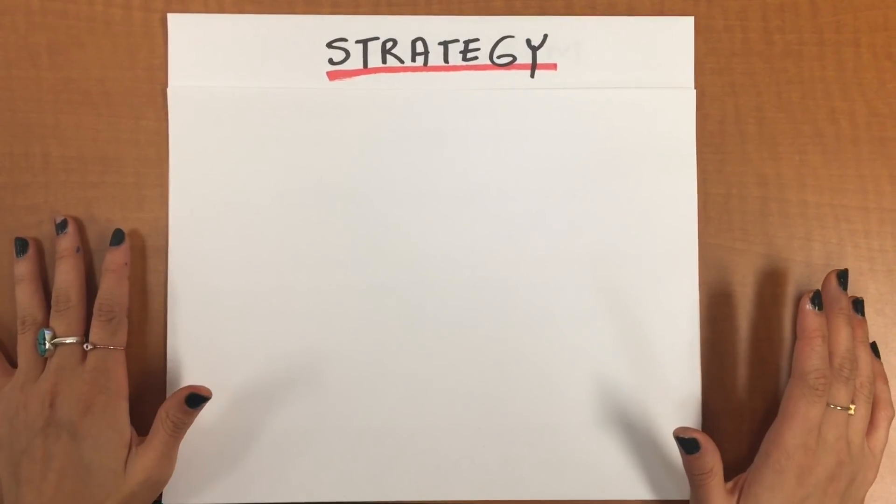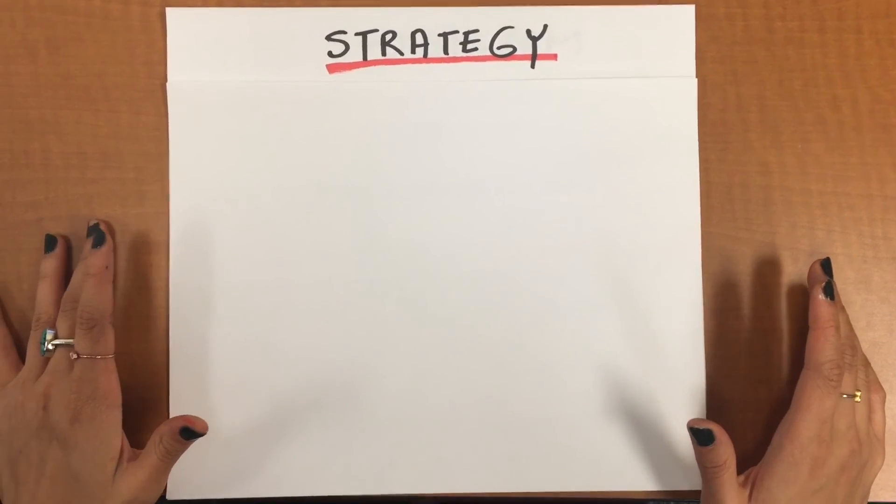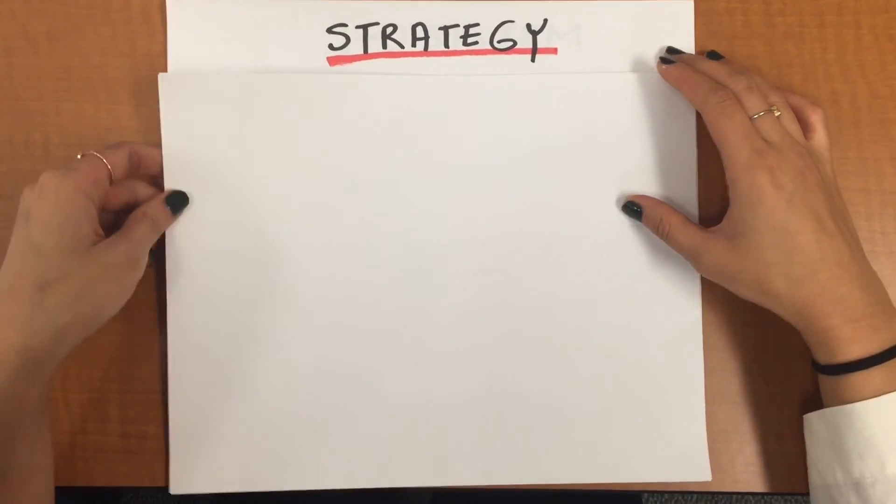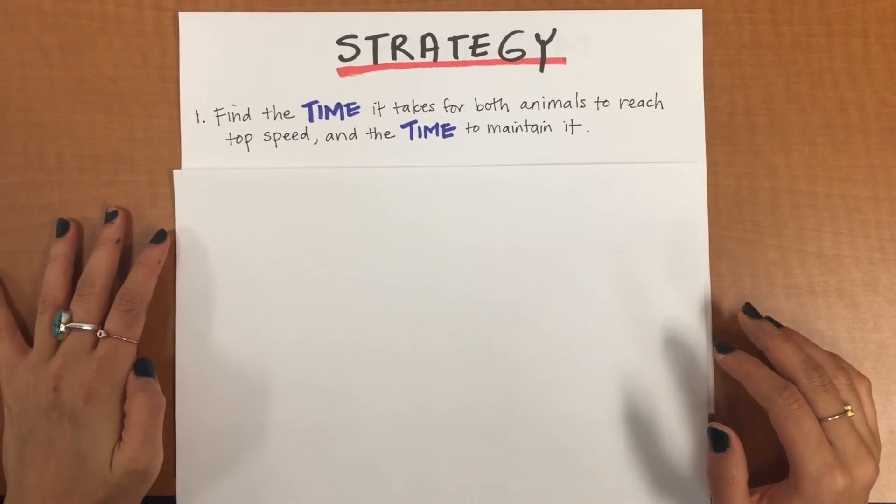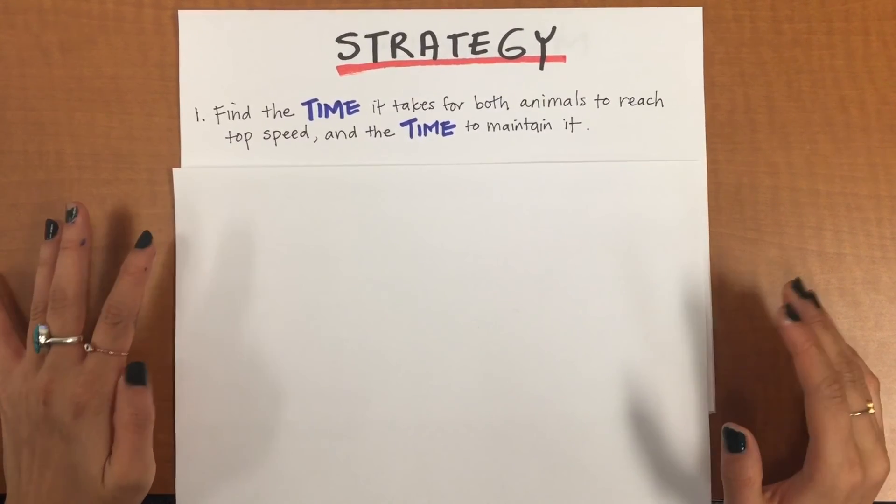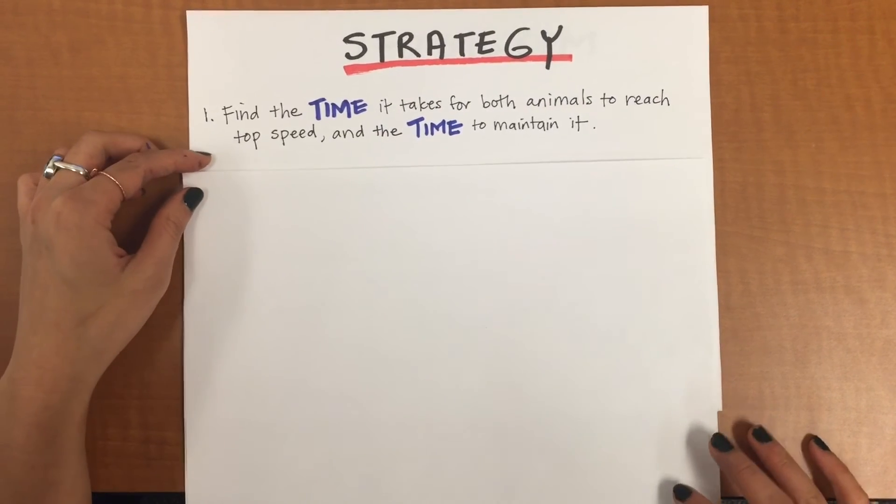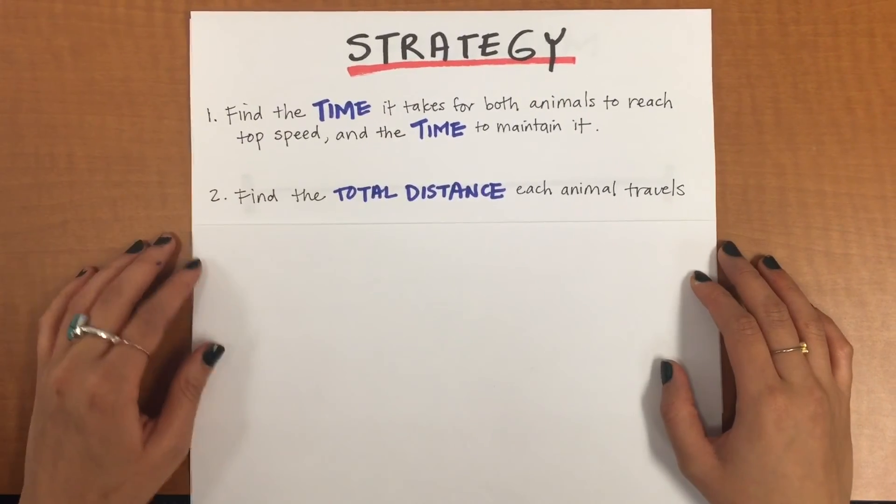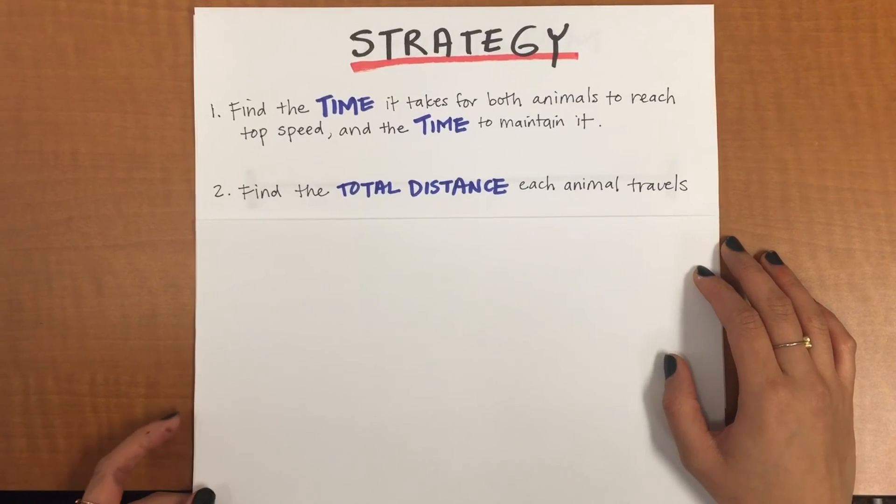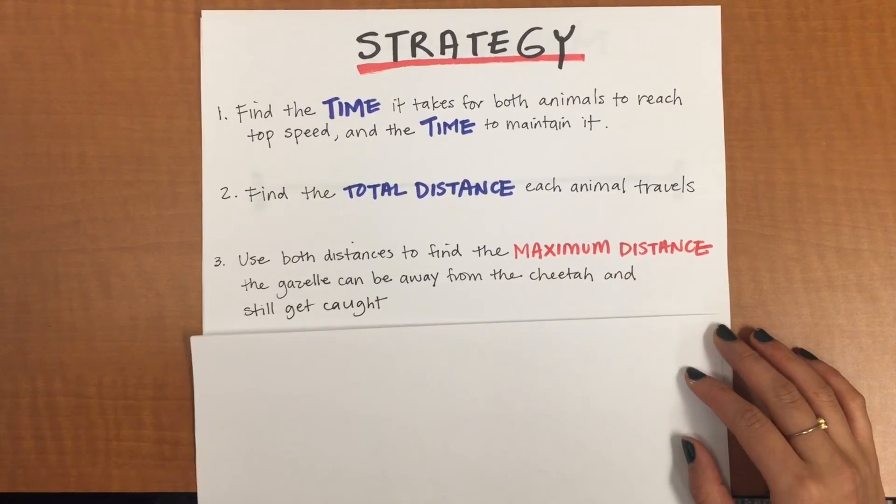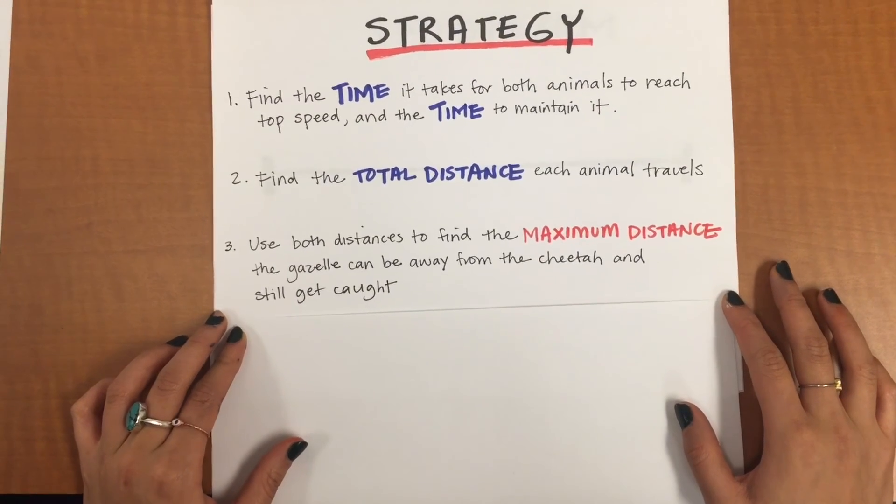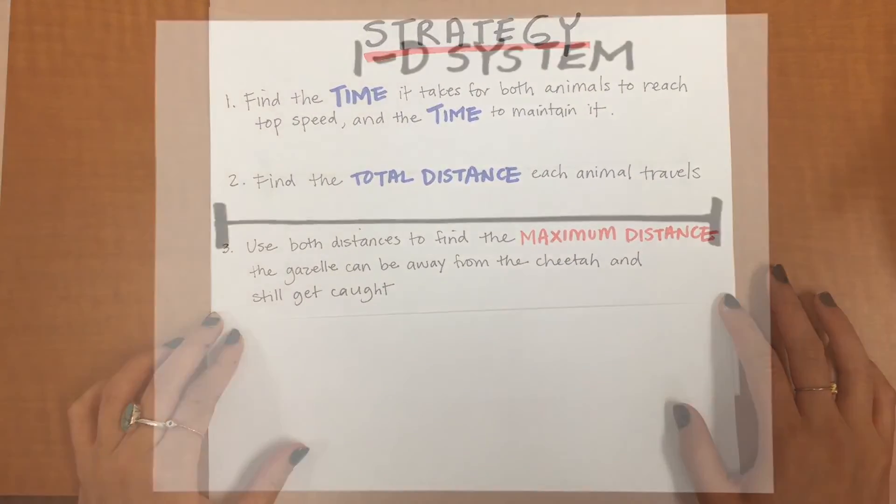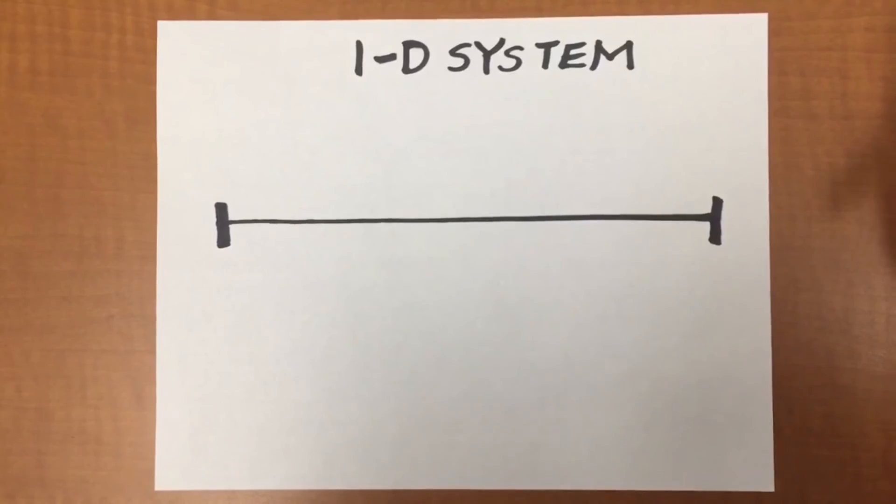Now to approach this problem, I'm going to simplify it down for you to three steps. One, we find the time it takes for both animals to reach top speed and the time for both the cheetah and gazelle to maintain this top speed. Two, we find the total distance each animal travels. Three, we use both distances to find the maximum distance the gazelle can be away from the cheetah and still get caught.